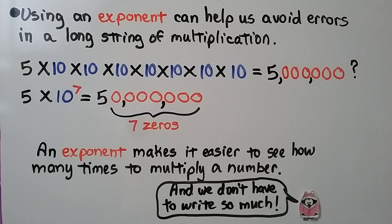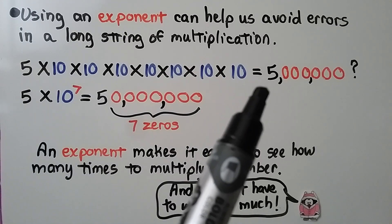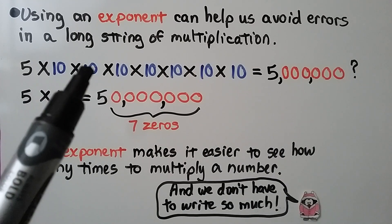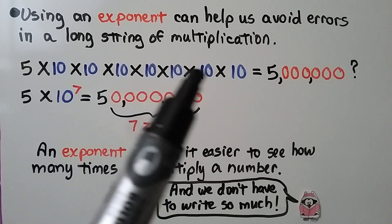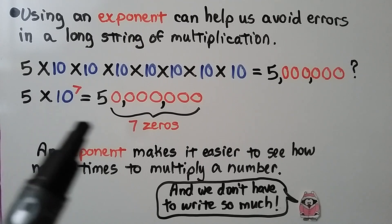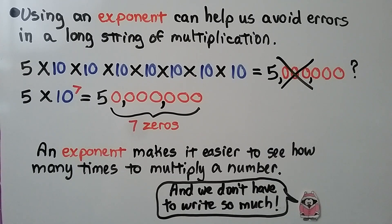Using an exponent can help us avoid errors in a long string of multiplication. Here we have 5 times all these 10s, and it was written that it's equal to 5 million. But let's count the tens: 1, 2, 3, 4, 5, 6, 7 tens. That's 5 times 10 to the 7th power, which means we should have 7 zeros — but there are only 6 zeros. So this is wrong. It's not 5 million; it's 50 million. An exponent makes it easier to see how many times to multiply a number.